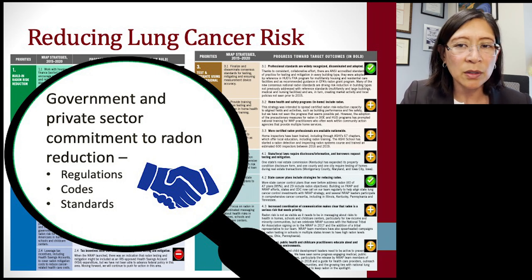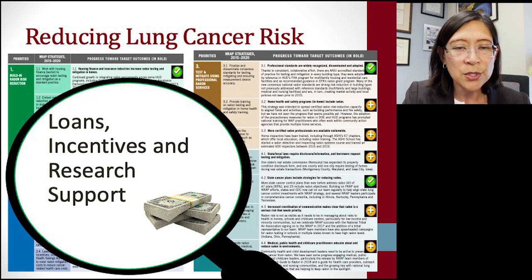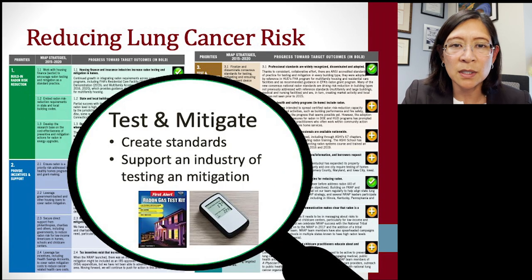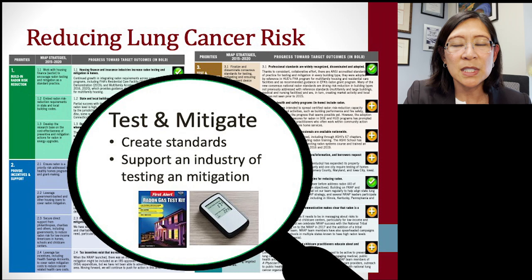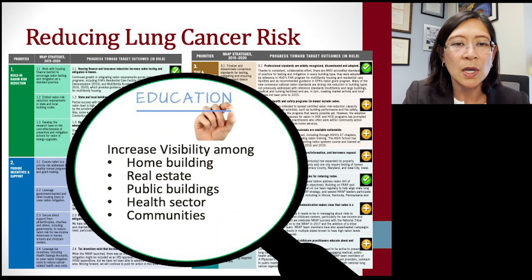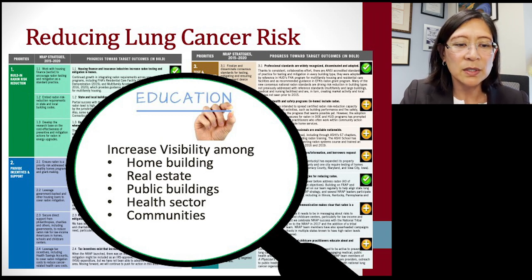The National Radon Action Plan strategically focuses on government and private sector commitment to radon reduction, creating regulations, codes, and standards for housing — requiring great partnership and coordination at community and national levels. Priorities include investment through loans, incentives, and research support. There's also a focus on making testing and mitigation a supported industry, and widespread education increasing visibility of radon among home builders, real estate agents, public buildings, schools, the health sector, and communities — normalizing the conversation about radon.